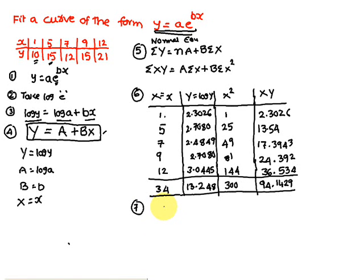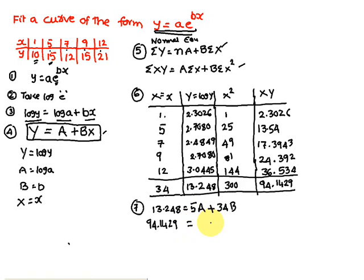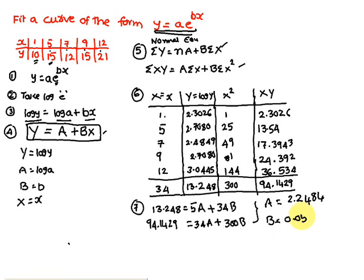Substituting into the normal equations: the number of data pairs is 5, so the first equation is 5A + 34B = 13.248, and the second equation is 34A + 300B = 94.1429. Solving these two equations gives capital A = 2.2484 and capital B = 0.059.